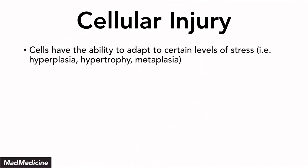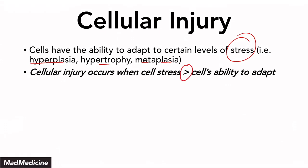Our cells have an ability to adapt to certain levels of stress through mechanisms like hyperplasia, hypertrophy, and metaplasia, just to name a few. If the level of stress upon a cell exceeds the ability of a cell to handle that stress, cellular injury is going to occur. When you have too much stress for the cell to handle, it cannot adapt and essentially you are going to injure the cell.